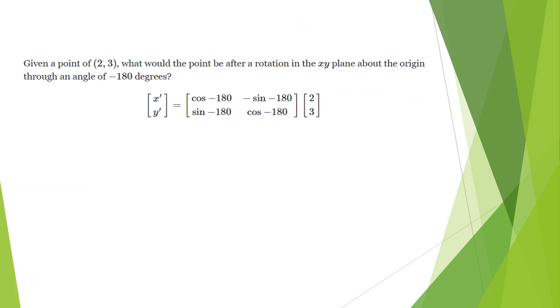Let us do a problem. Here you can see x dash y dash equal to cos minus 180. You can see minus 180. What does it mean? We are rotating by an angle minus 180 degree and it is in clockwise direction. That is why minus degree. And the initial position is 2 and 3.